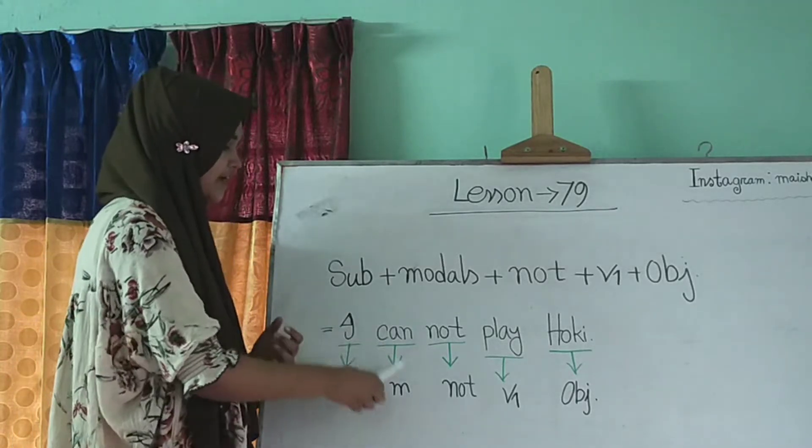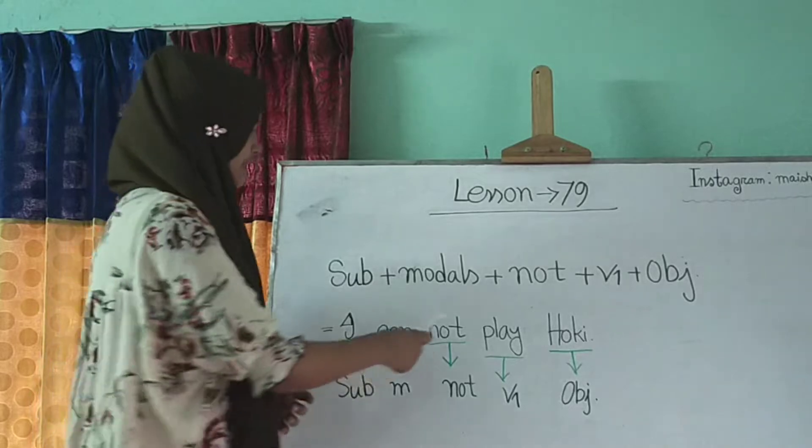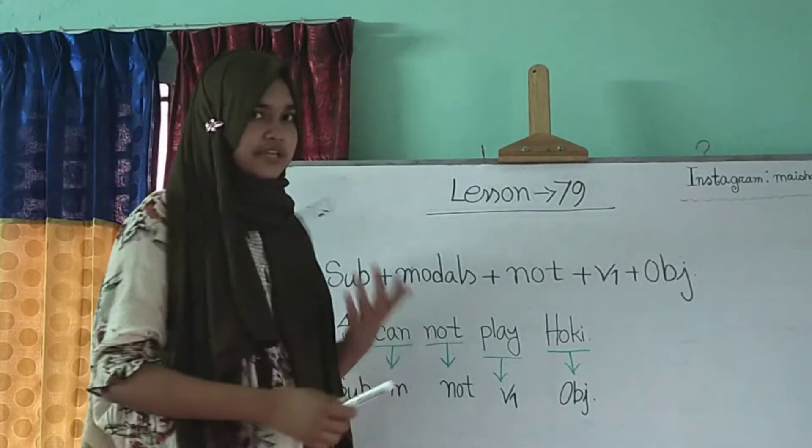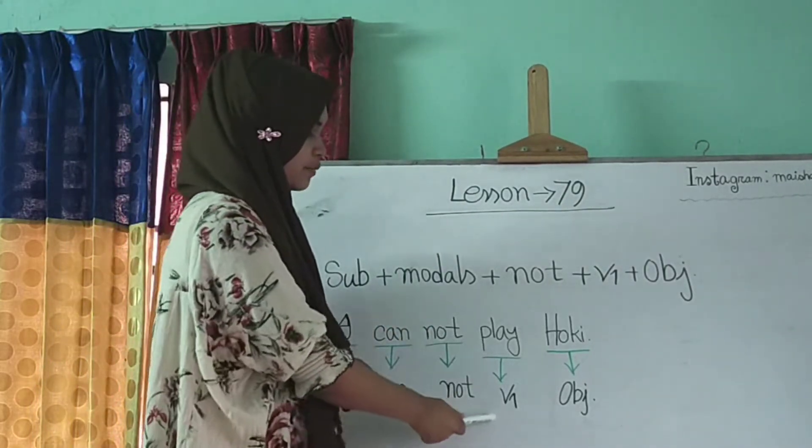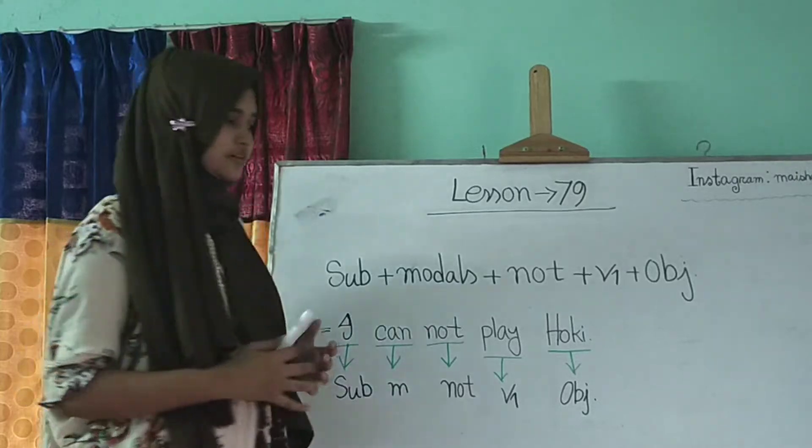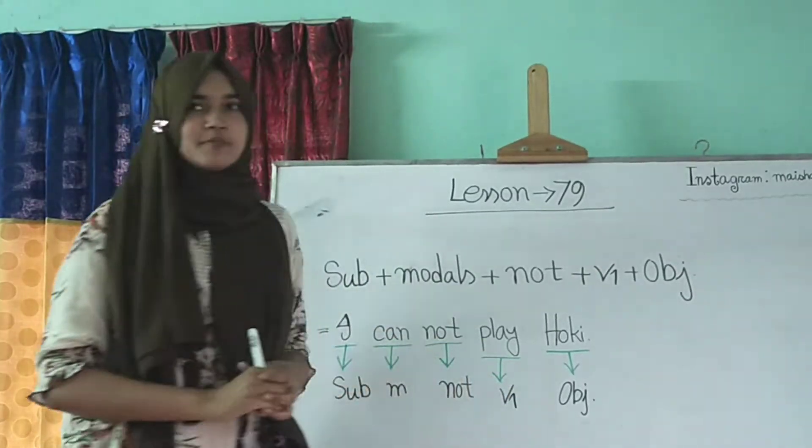Here I is subject. Can is model words. And then not is negative. And then play verb one that means verbs based form or the present form. And then hockey is object.